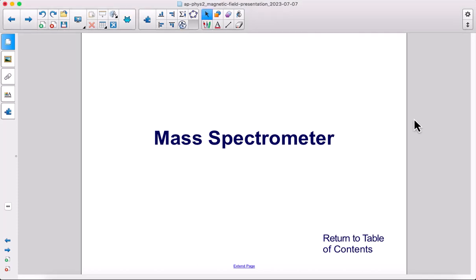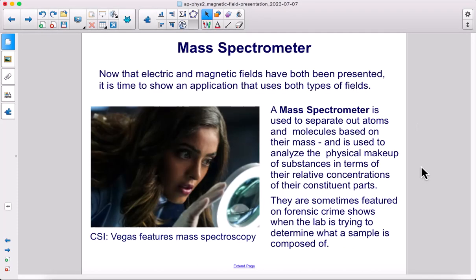Mass spectrometer. Now that electric and magnetic fields have both been presented, it is time to show an application that uses both types of fields.